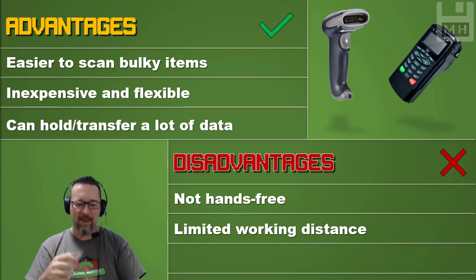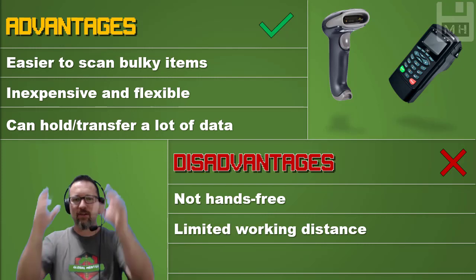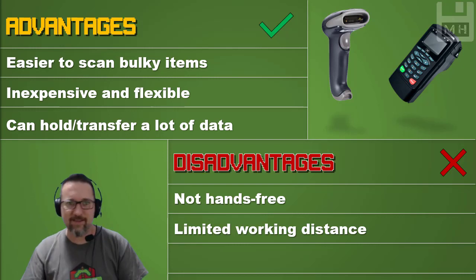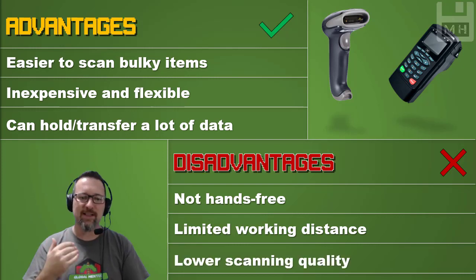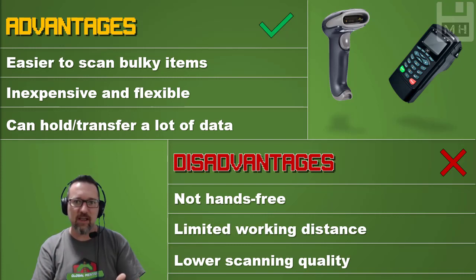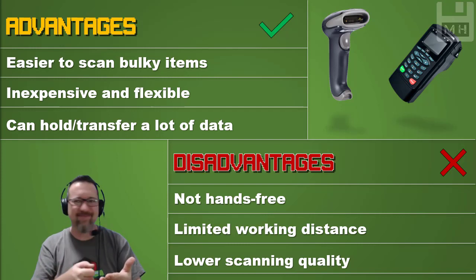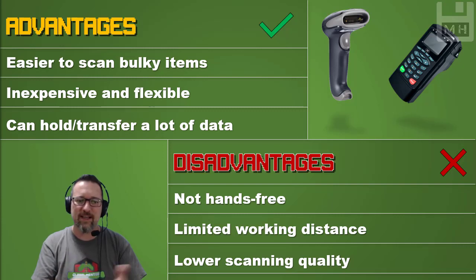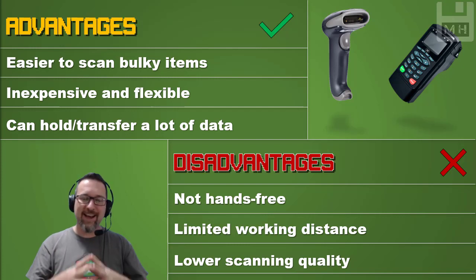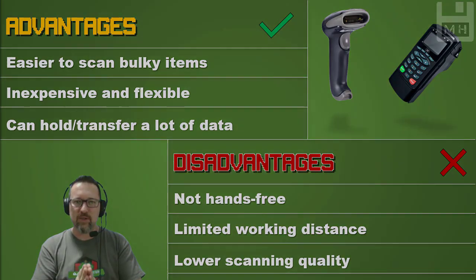There is also a limited working distance — you can't scan something from across the room; it has to be quite close. And handheld scanners have a lower scanning quality, meaning they need a clear, easy-to-read barcode — if a barcode is smudged, the scanner can't figure out what it's looking at. So those were some of the hardware input devices, and in the next video we'll look at some more.